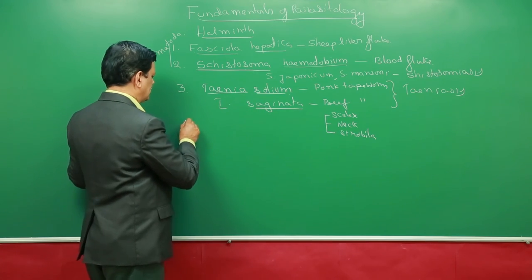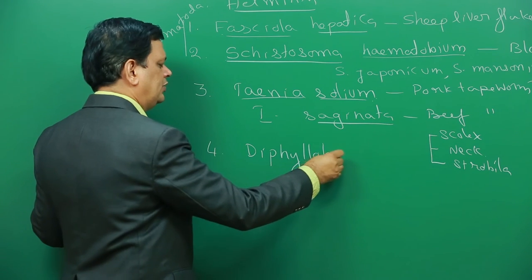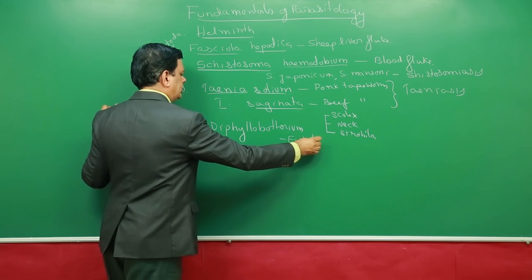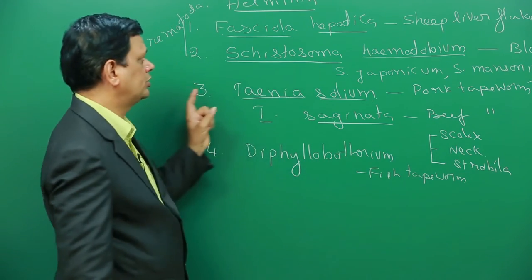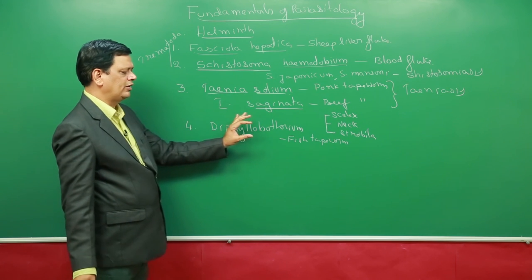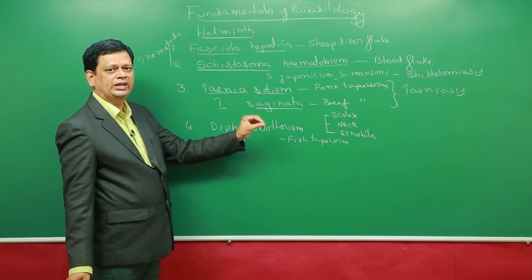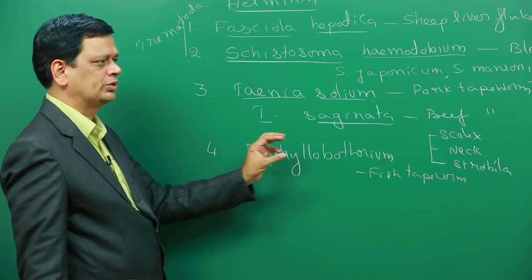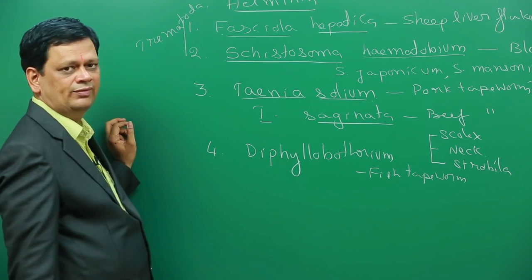Like this, other tapeworms are also present, Diphyllobothrium. This is called fish tapeworm. Diphyllobothrium is called fish tapeworm. So this is infecting human beings by eating improperly cooked fish. Through fish, humans get this infection.